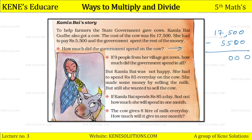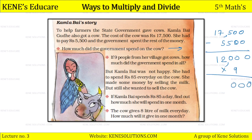17,500 minus 5,500 equals 12,000 rupees — so the government is paying 12,000 per cow. If nine people from her village got cows, how much did the government spend in all? We multiply 12,000 by 9, which gives 1,08,000 rupees — that is one lakh eight thousand rupees spent by the government.